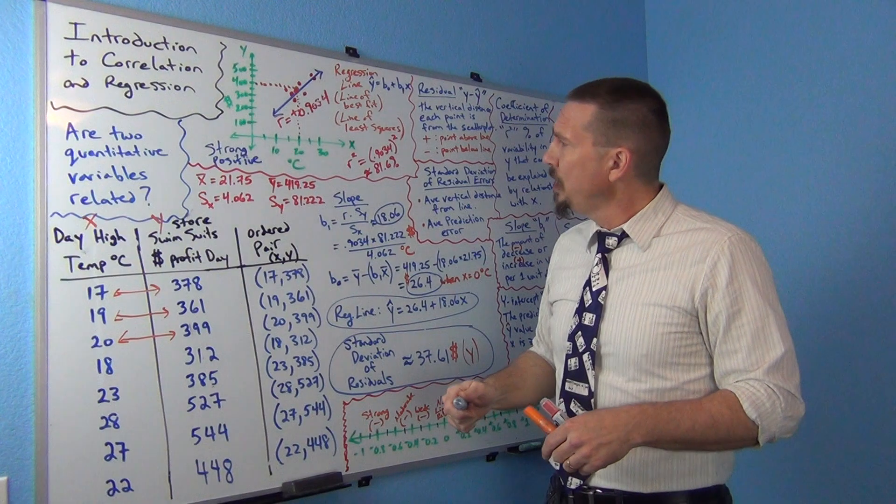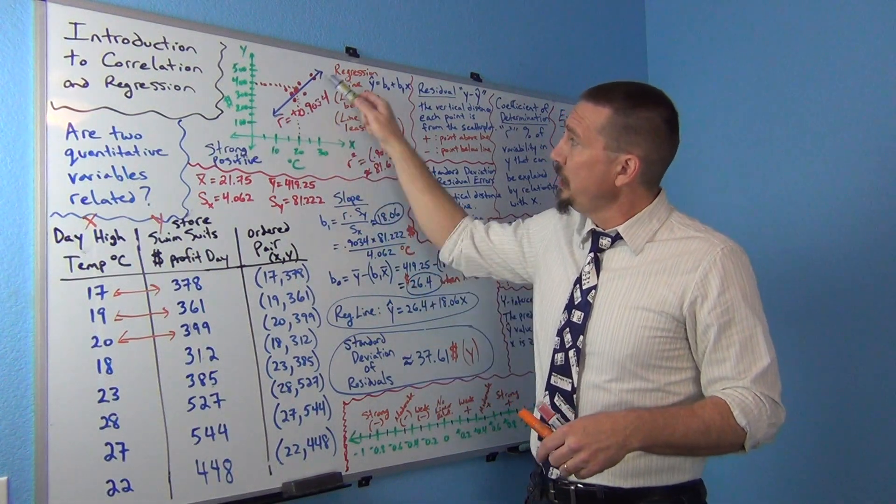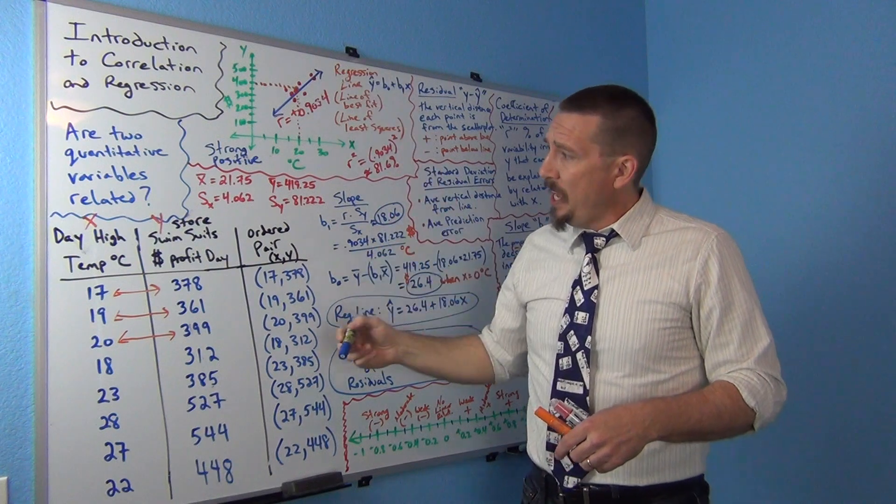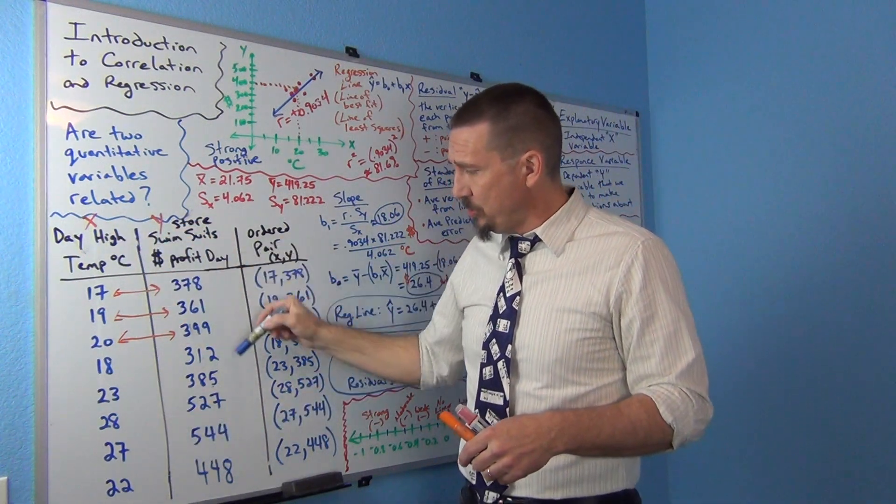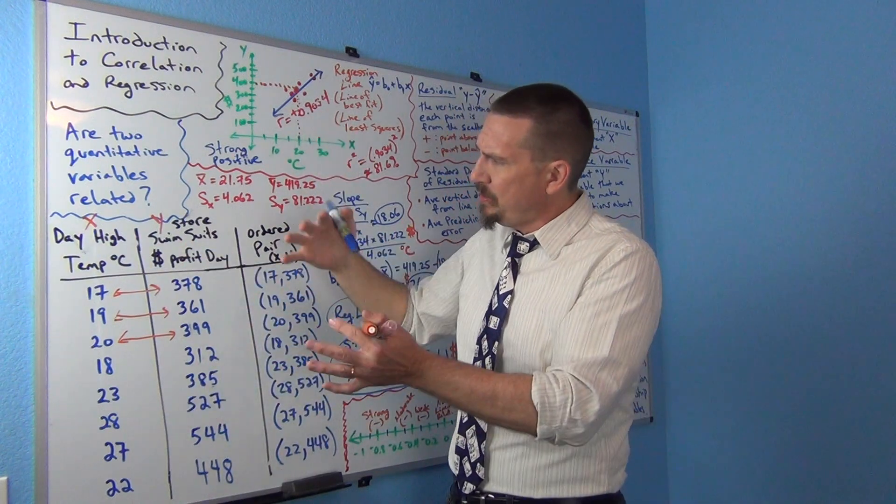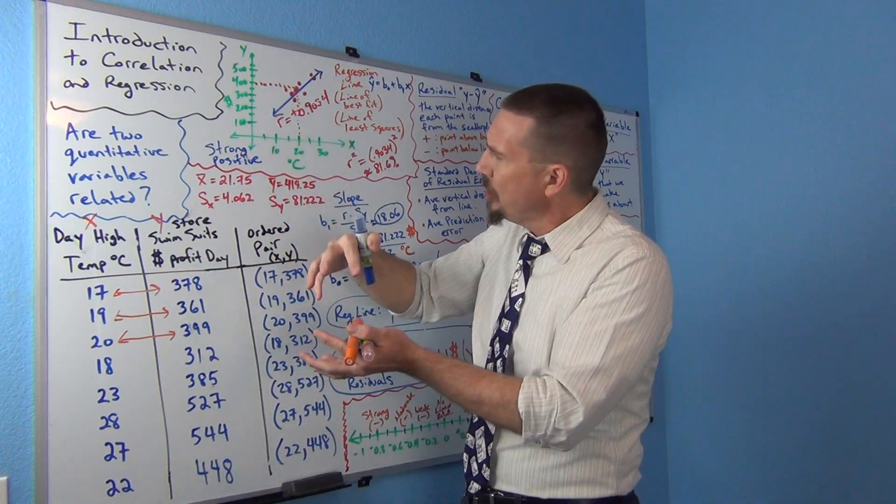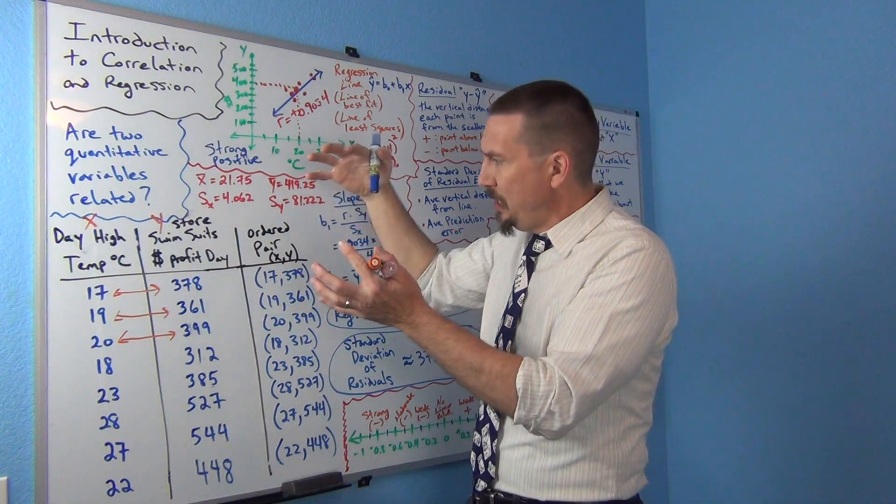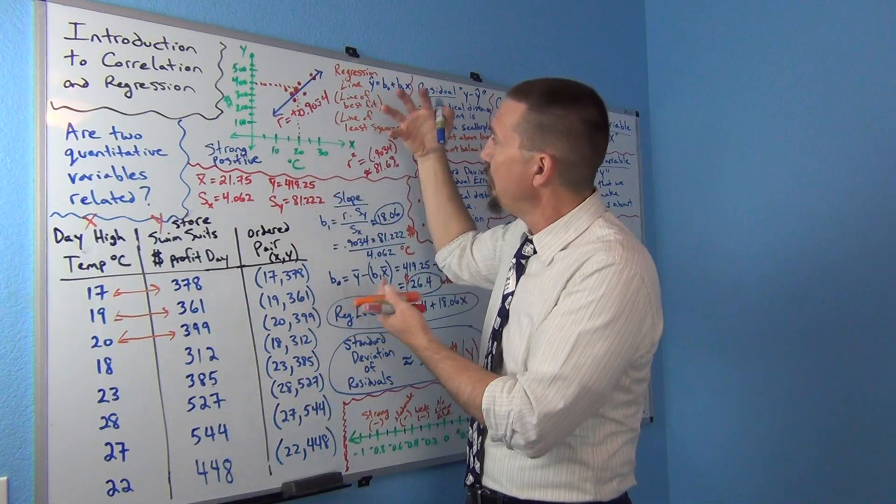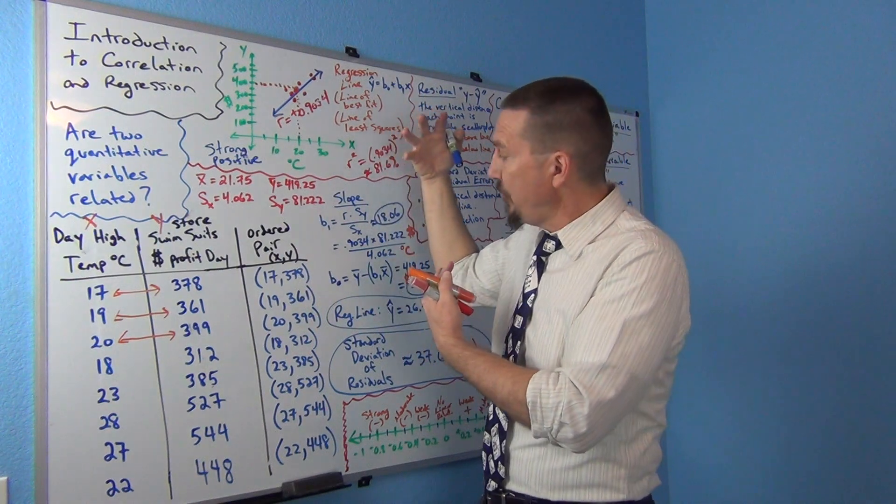Okay, so this one looks like there is a linear relationship. It seems like it's a positive relationship. In other words, as temperature is getting higher, the profits are tending. If I look at all the days where the temperature was lower, those tend to have a little bit smaller profits. And days when the temperature is higher, I seem to have a little more profit in those days.